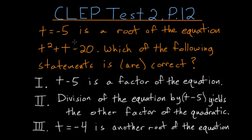t is equal to negative 5 is a root of the equation t squared plus t minus 20. Which of the following statements is or are correct? So if we look at this one at a time, it says that t minus 5 is a factor of the equation.